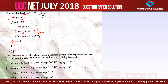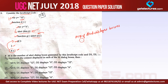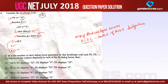Now they are asking: if m is the number of alert dialog boxes generated by this JavaScript code, and d1 and d2 are the content of those dialog boxes, then what is the value of m and what is the content of each of these dialog boxes?